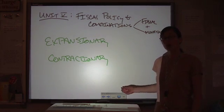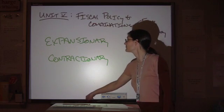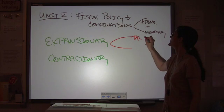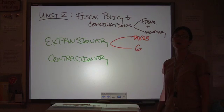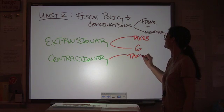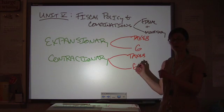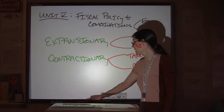With fiscal policy, we're talking about two specific things. You can either adjust taxes, or you can adjust government spending. I'm using G for government spending because that's the way it is in your GDP equation you've been using all year.